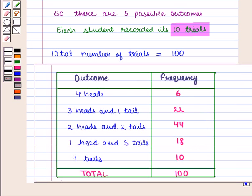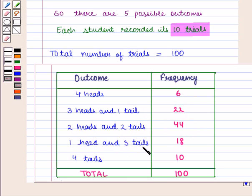In all the four trials, the outcome of four heads occurred six times. Three heads and one tail occurred twenty-two times. Two heads and two tails occurred forty-four times. One head and three tails occurred eighteen times. And four tails occurred ten times. Adding all the frequencies gives one hundred, which is the total number of trials.